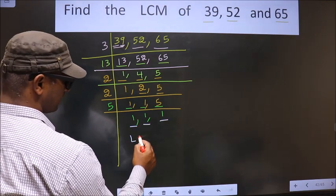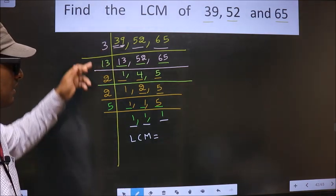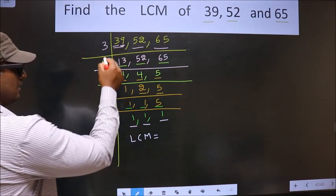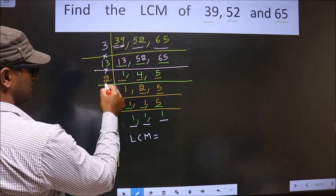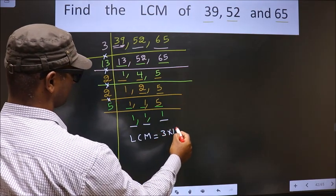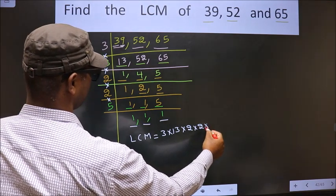So now our LCM is the product of these numbers. That is 3 into 13 into 2 into 2 into 5.